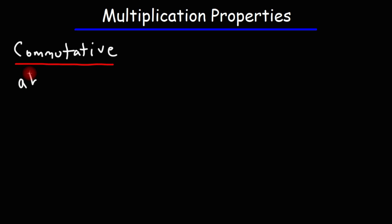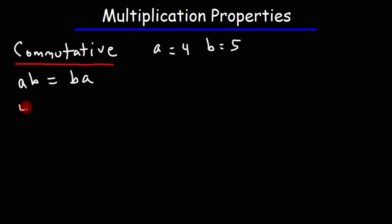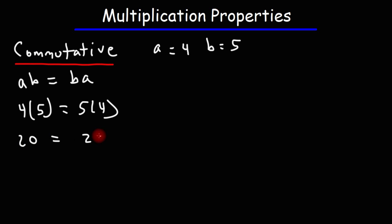The formula is a times b is equal to b times a. So what does that mean? When you're multiplying two numbers, the order in which you multiply doesn't matter — the value is going to be the same. So let's say a is 4 and b is 5. 4 times 5 is going to be the same as 5 times 4. It doesn't matter which number you multiply first. 4 times 5 is 20, and 5 times 4 is also 20.